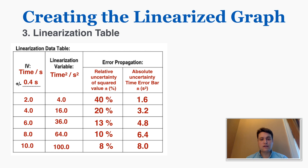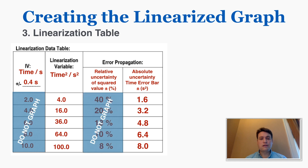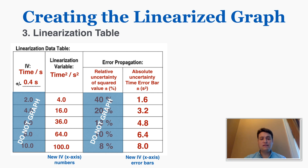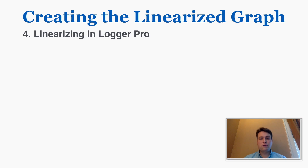This was the goal of the linearization table — to get the absolute uncertainties that we can put on the graph as error bars. Now that I have those new uncertainties and those new squared time values, those will be the only two things I put on the graph. The relative uncertainties were just a stepping stone to get the absolute uncertainties for the error bars, and I no longer need the original IV values. All that's left is to graph these new numbers in LoggerPro.